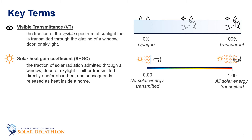Solar heat gain coefficient is another closely related term, except it incorporates the entire electromagnetic spectrum and not just the visible portion. It represents the amount of solar energy that enters through the window compared to the amount that would have entered if there was nothing between you and the sun. For example, a window with a solar heat gain coefficient of 0.25 only allows one quarter of the sun's heat to enter the space.